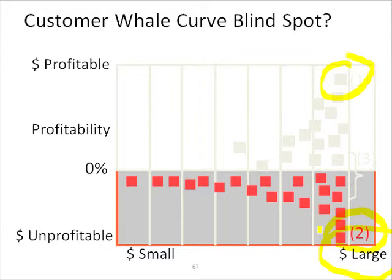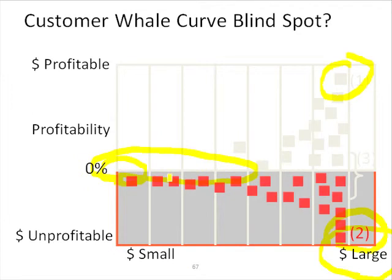So in distribution businesses, the leverage comes with the big accounts. Conversely, if you had tiny little accounts and they gave you one order for the year and you lost $15 on it, it doesn't show up — it's on the broad back of the whale. You'll find that most of the accounts along the broad back of the whale tend to be very small.